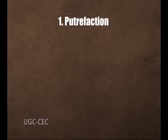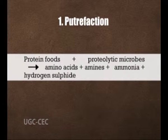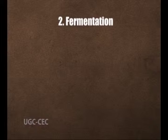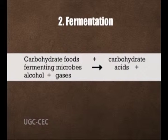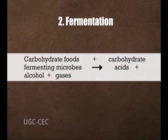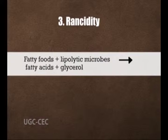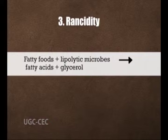The degradation process may be of three types. First, putrefaction: protein-rich foods, when combined with proteolytic microbes, lead to the production of amino acids, amines, ammonia and hydrogen sulfide. Second, fermentation: carbohydrate-rich food, when contaminated by carbohydrate-fermenting microbes, leads to the production of acid, alcohol and gases. Third, rancidity: fatty foods, when combined with lipolytic microbes, generate fatty acids and glycerol.